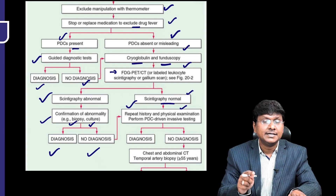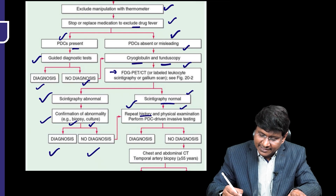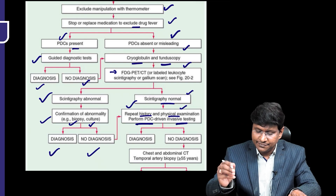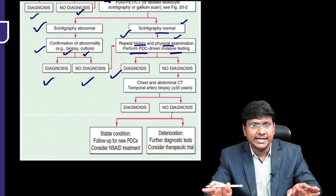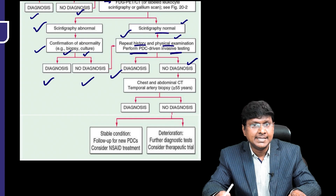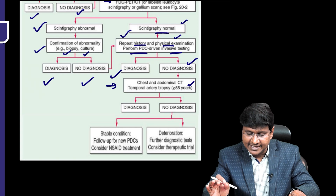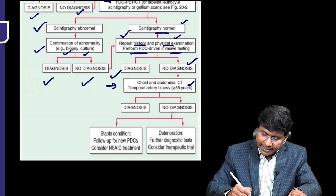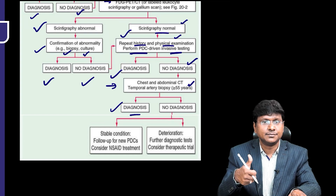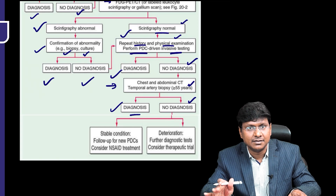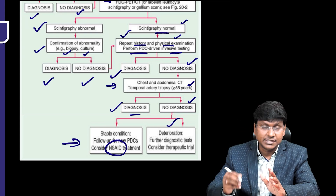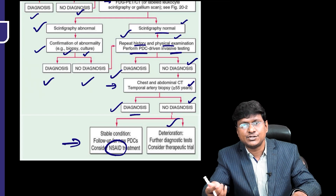If scintigraphy is normal, repeat the history and physical examination and consider pathological diagnostic clue driven invasive testing. If you are able to get the diagnosis, treat accordingly. But if there is no diagnosis and the patient is older than 55 years, perform chest and abdominal CT and temporal artery biopsy. If the patient remains stable and diagnosis is not made, ask for follow-up for new pathological diagnostic clues and consider NSI treatment. If the patient is deteriorating, perform further diagnostic tests or consider a therapeutic trial.